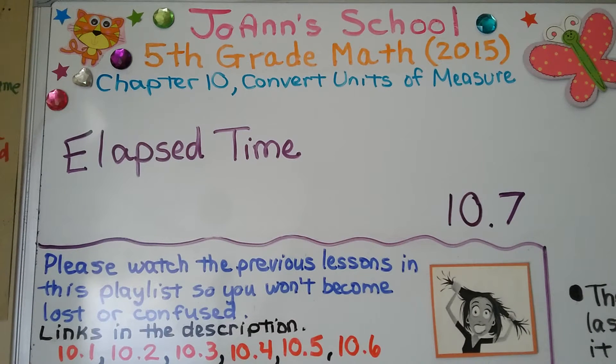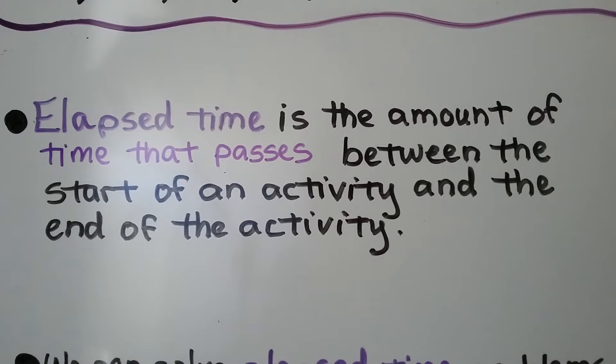Lesson 10.7, Elapsed Time. Elapsed time is the amount of time that passes between the start of an activity and the end of the activity.